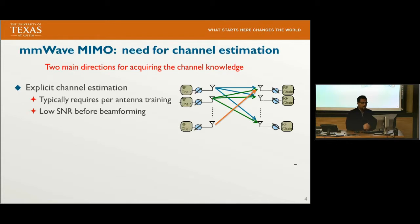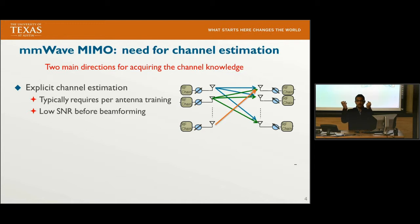As with any communication system, there is a need for channel estimation. There are two main directions for acquiring channel knowledge at the transmitter. The first technique is per-antenna channel estimation, which means that for every antenna, the transmitter broadcasts pilots and the receiver estimates the channel of each antenna. This has a drawback in millimeter wave systems because of the low SNR before beamforming.